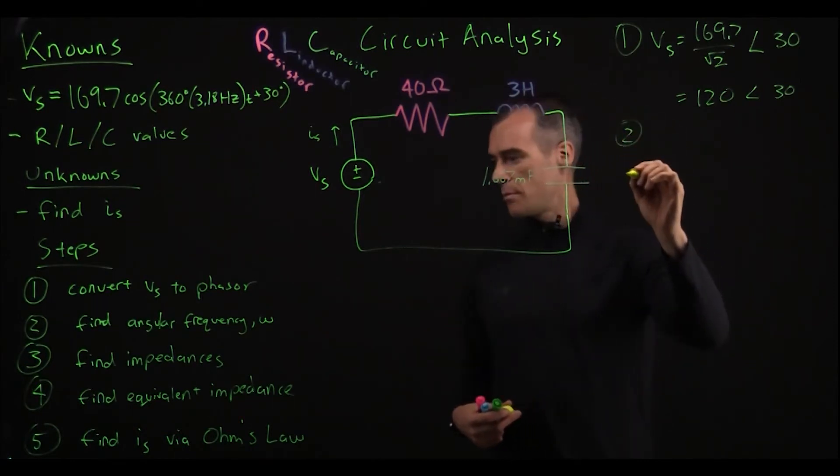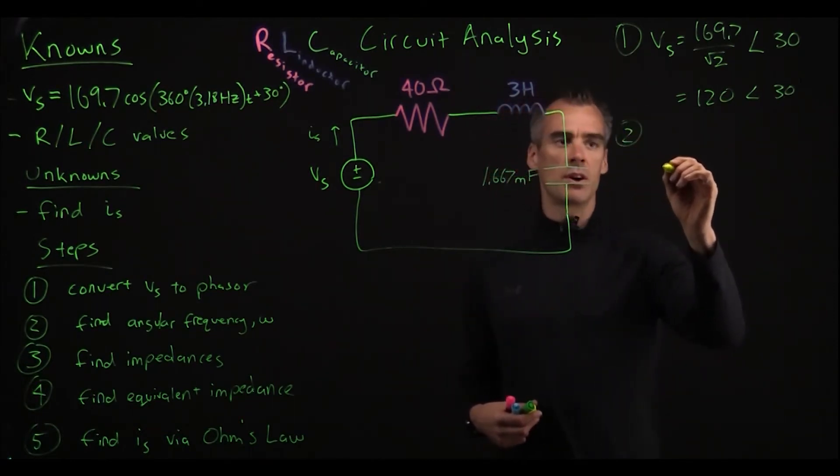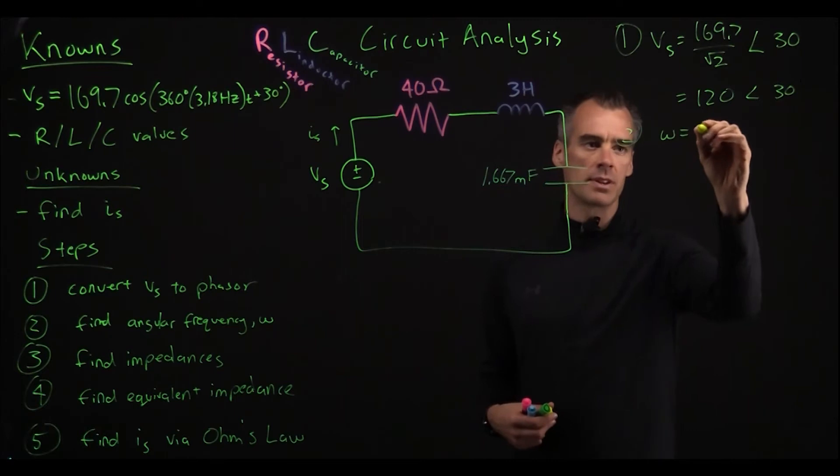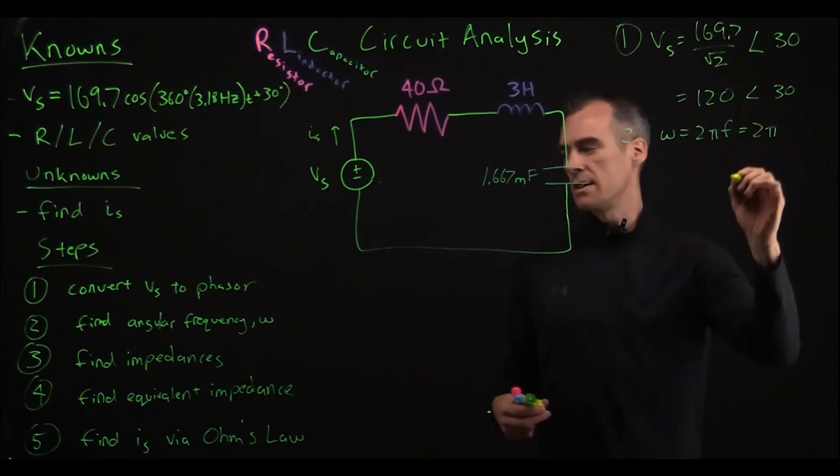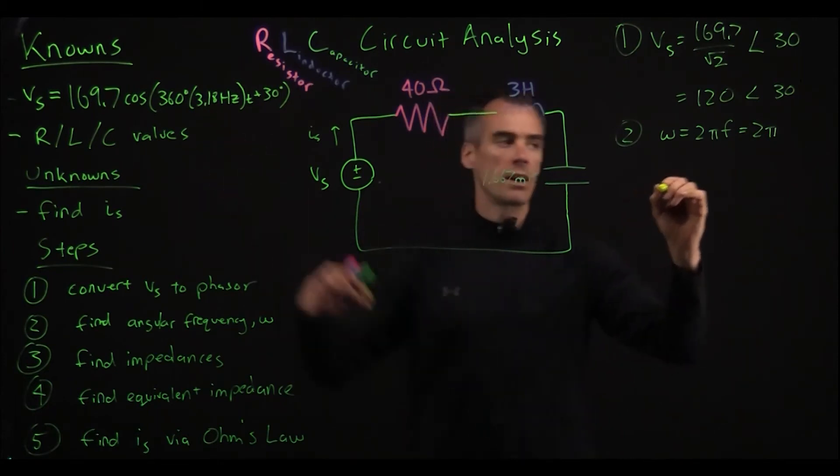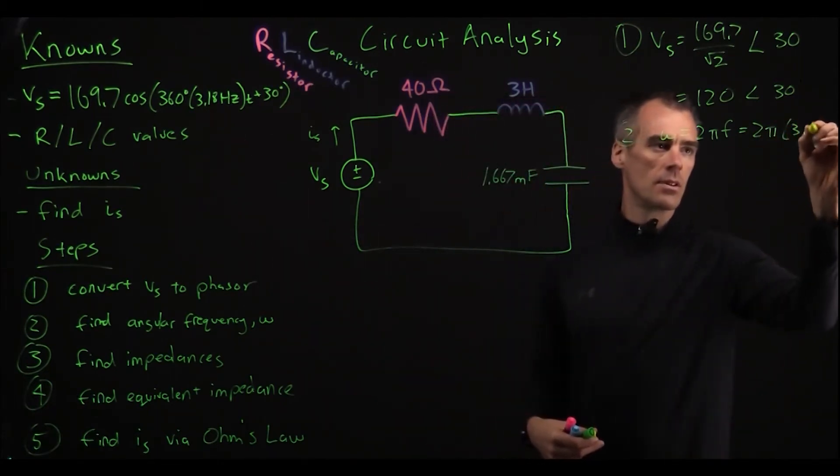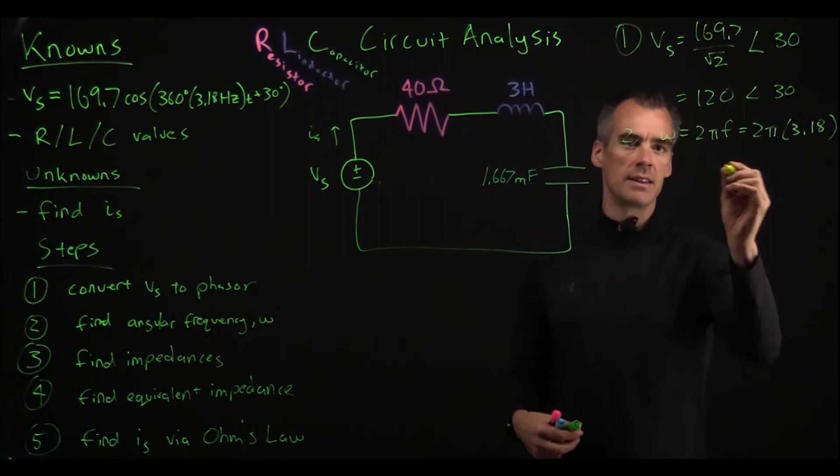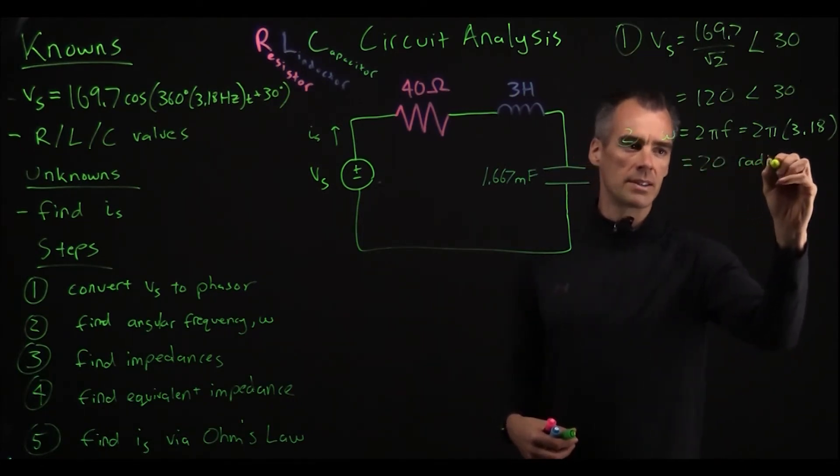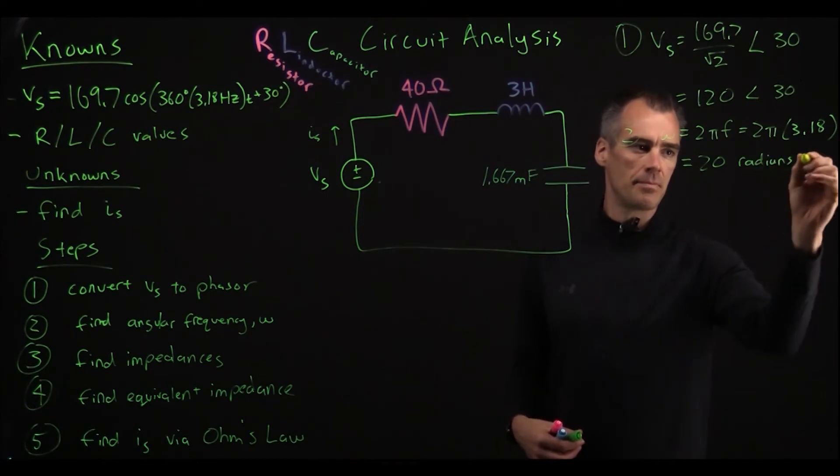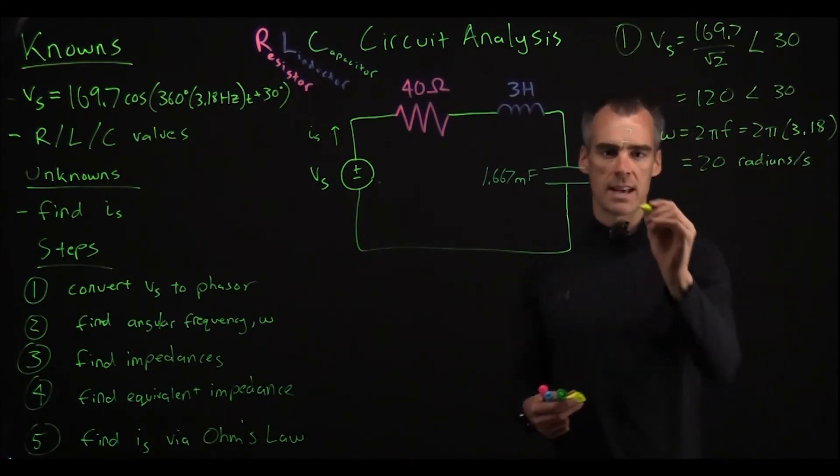And the second part was to find the angular frequency omega, and we know omega is simply 2 pi f, and that frequency is given here at 3.18 hertz. And if you go ahead and multiply these, you just end up with omega is equal to 20 radians per second. So check that one off pretty quick.